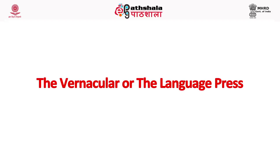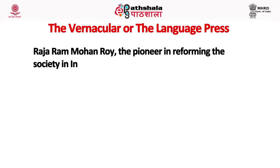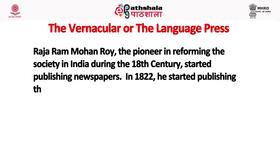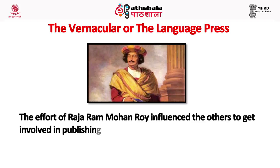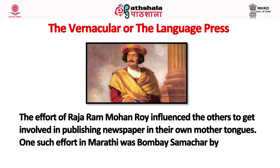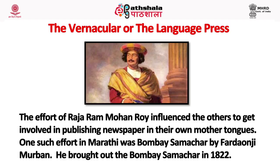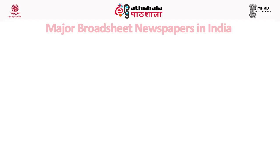Raja Ram Mohan Roy, the pioneer of reforming society in India during the 18th century, started publishing newspapers in 1822. He started publishing the first Bengali newspaper named Sambad Kaumudi, and in the same year he started publishing Mirat-ul-Akhbar, a Persian daily. His work influenced others to publish in their own mother tongue. One such effort in Marathi was Bombay Samachar by Fardaunji Marzban, brought out in 1822.